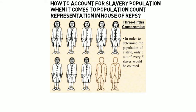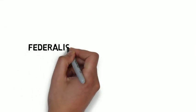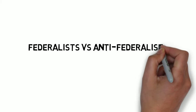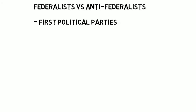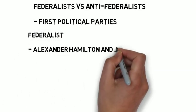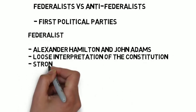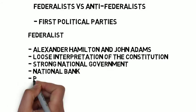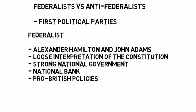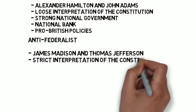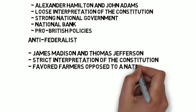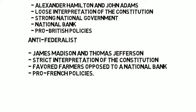Creating the constitution was very controversial. The first political parties were formed, known as the Federalists and Anti-Federalists — these are not the same Federalists and Anti-Federalists as those who favored or didn't favor the Revolutionary War. Federalists were led by Alexander Hamilton and John Adams; their platform consisted of a loose interpretation of the constitution, a strong national government, construction of a national bank, and pro-British policies. Anti-Federalists were led by James Madison and Thomas Jefferson; their platform favored farmers, a strict interpretation of the constitution, opposed a national bank, and were pro-French policies.